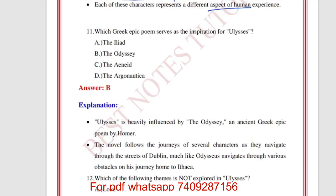Which Greek epic poem serves as the inspiration for Ulysses? The answer is B — the Odyssey. The Odyssey is a great epic poem by Homer. The novel follows the journey of several characters set in Dublin, paralleling Homer's epic.